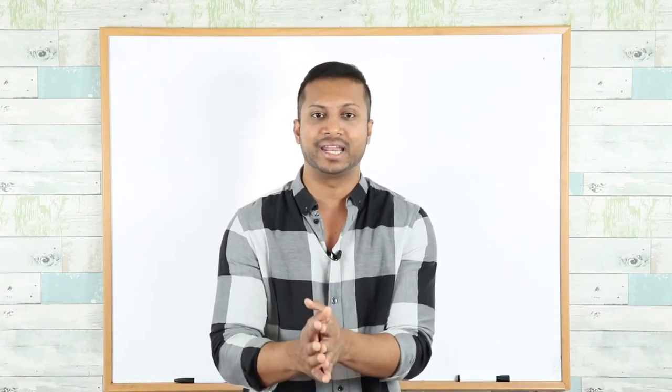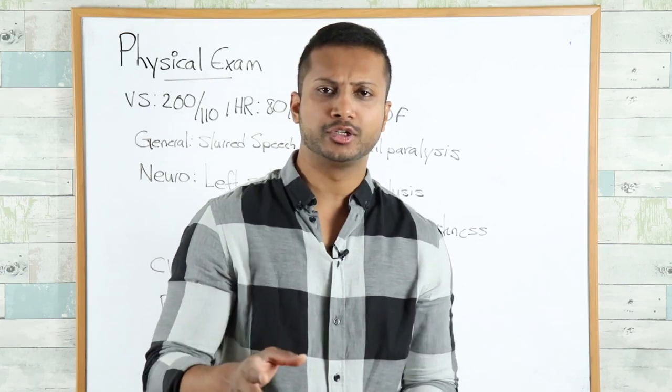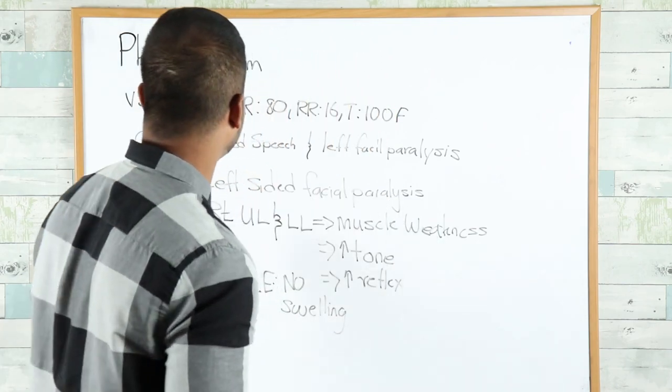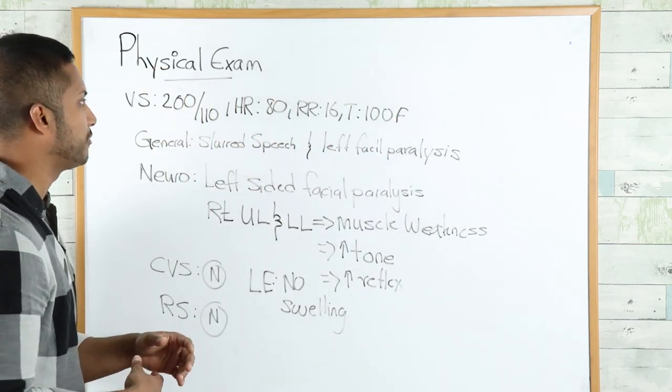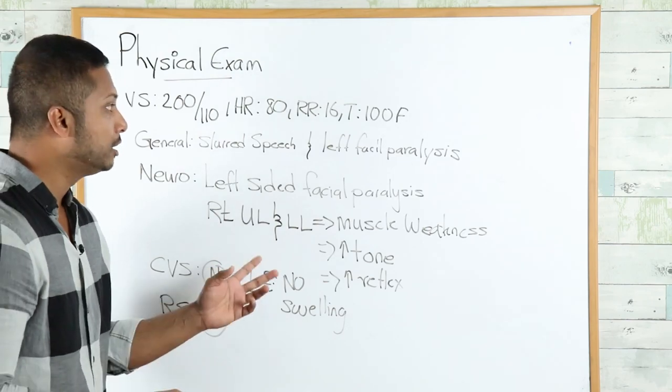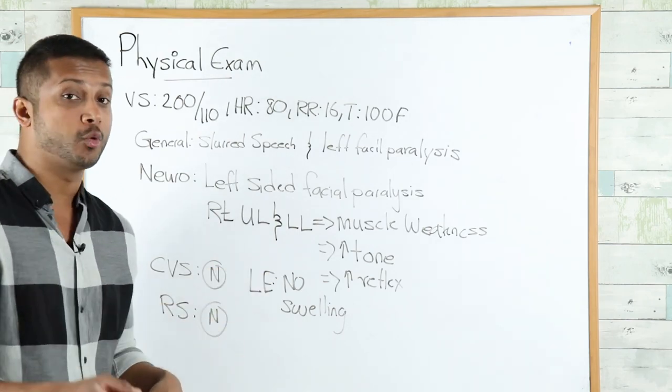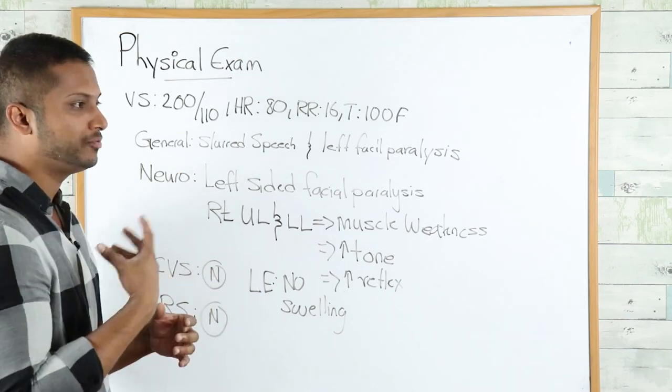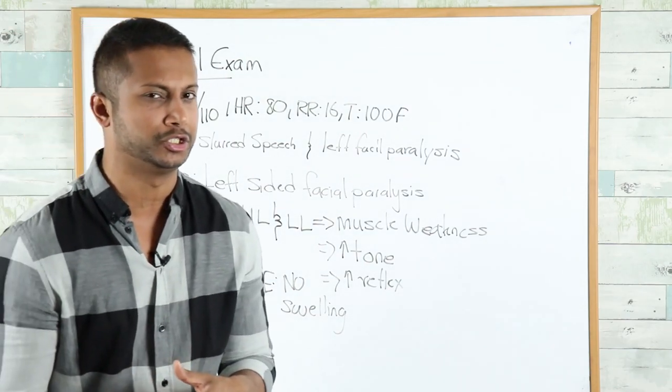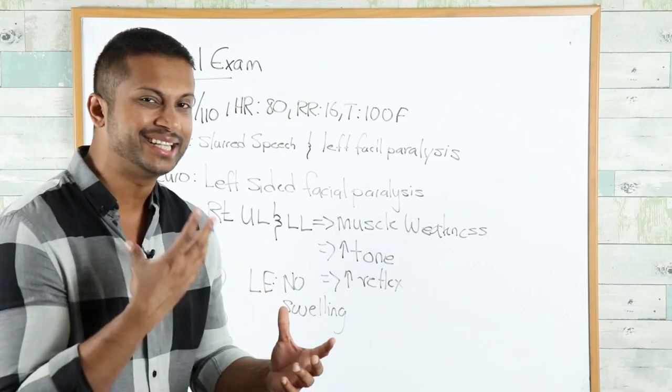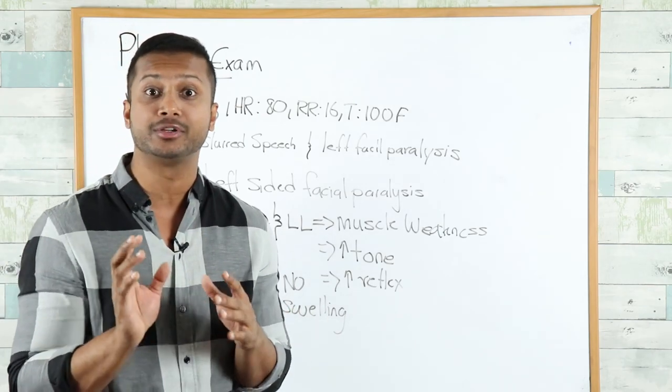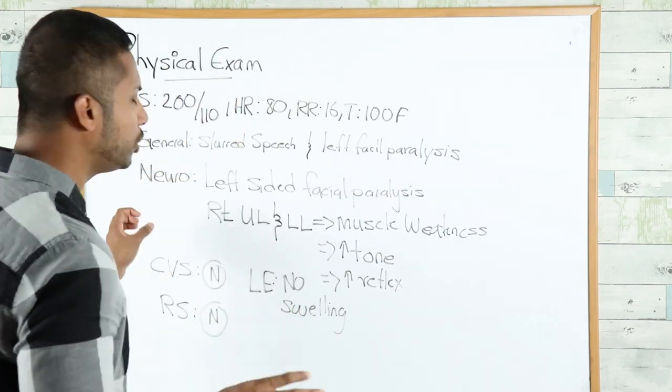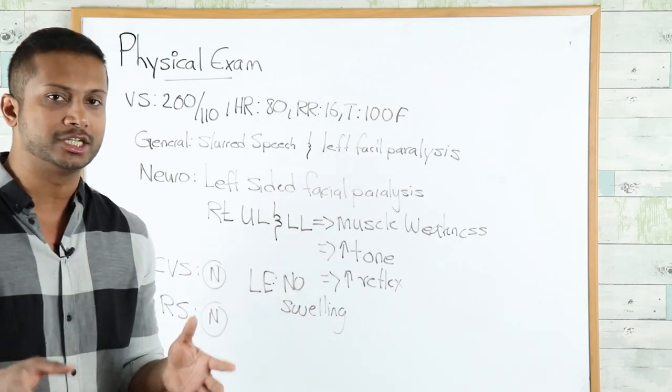On physical examination, vital signs show blood pressure 200 over 110, heart rate 80, respiratory rate 16, and temperature 100 degrees Fahrenheit. On general examination, the patient has slurred speech and a left-sided facial paralysis.